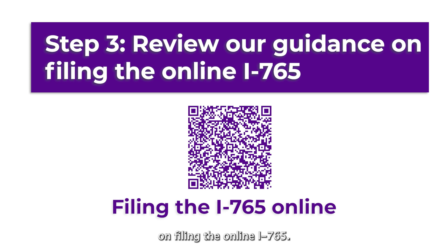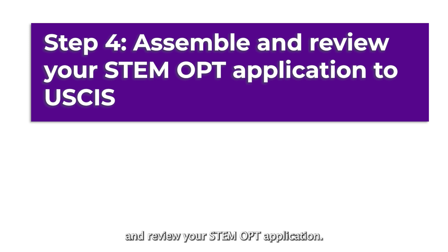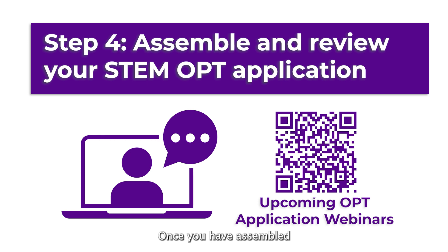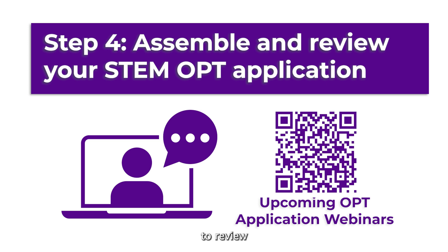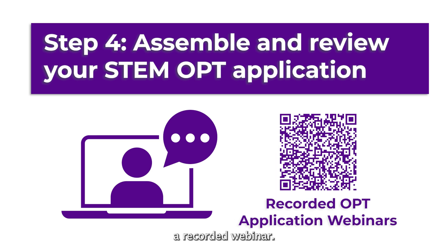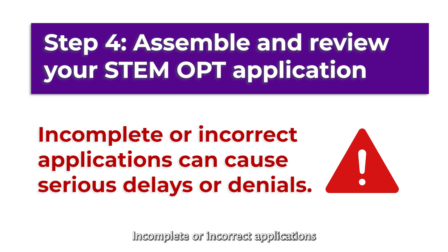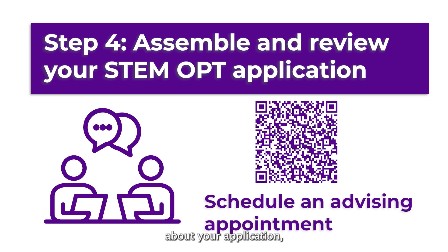Step 3: Review our guidance on filing the online I-765. Step 4: Assemble and review your STEM OPT application. Once you have assembled your STEM OPT application, attend an application preparation webinar to review what a complete application needs to include. You can also review a recorded webinar.